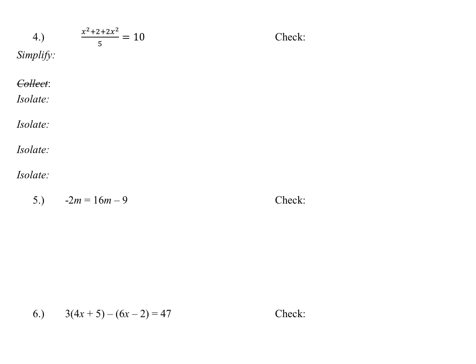So looking at it, the first thing I'm going to do is simplify. So remember, simplify means distribute and combine like terms. Well, there's no parentheses, no distributing, so what I do is I just combine my like terms. I have an x squared, which counts as one x squared plus two x squared, which is going to give me three x squared plus two over five equals 10.